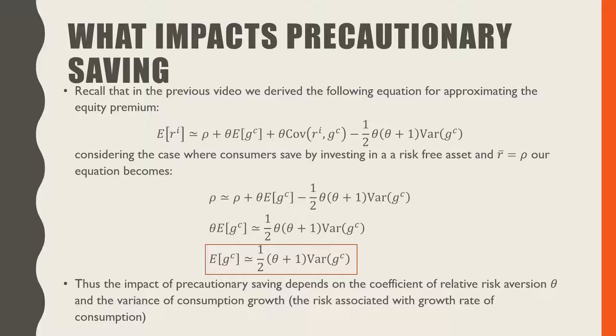Thus, we can say the impact of precautionary saving depends on the coefficient of relative risk aversion theta and the variance of consumption growth, which is also interpreted as the risk associated with this growth rate from consumption.